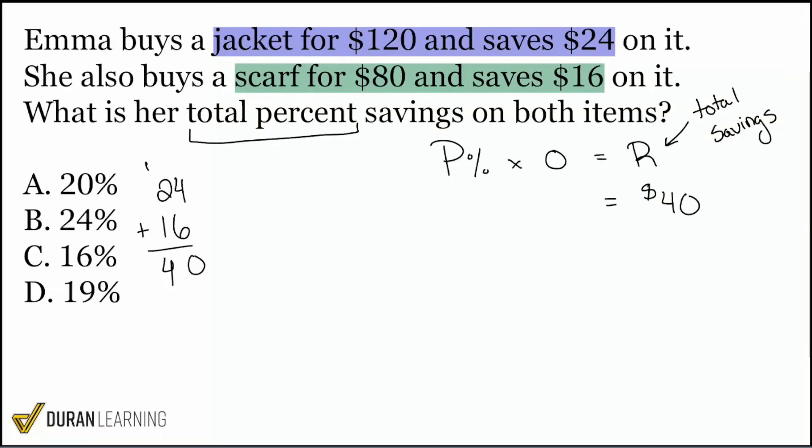And then when we have the original amount, we're going to add together the jacket and the scarf because we want to know the original price before the discount. So when we take a look at the one hundred and twenty plus the eighty, that will be two hundred. And so now we can go ahead and calculate the percentage of two hundred that is forty.